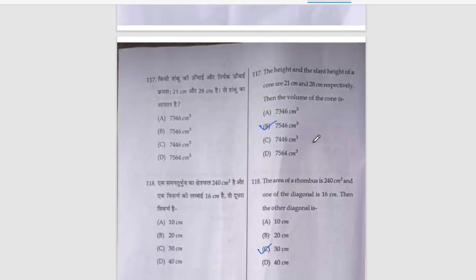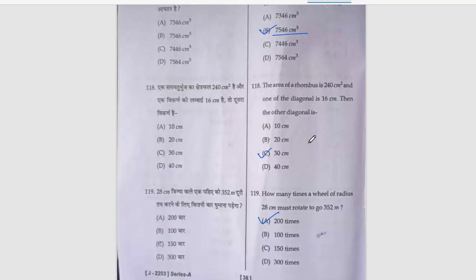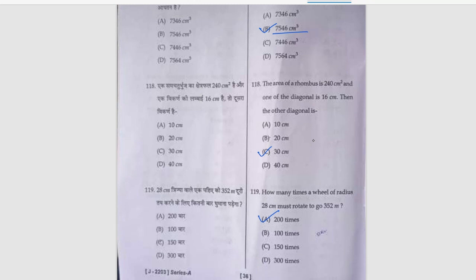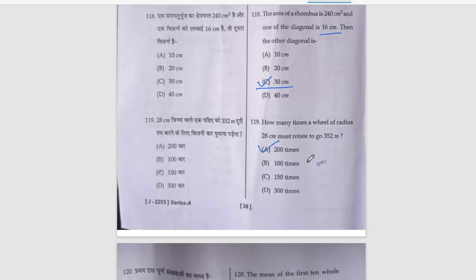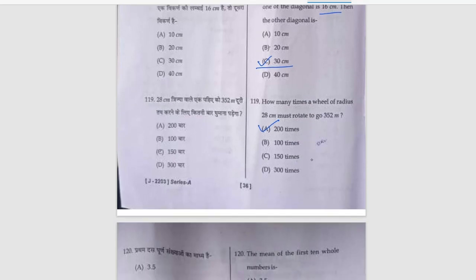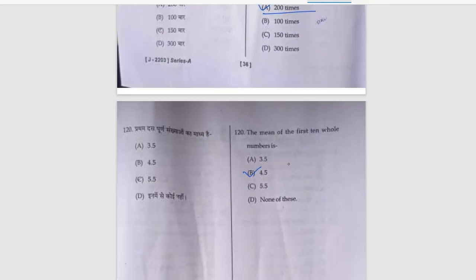Height and slant height of cone are 21 and 28 respectively, then the volume is 7546, option number B. Area of rhombus is 240 cm square and one of the diagonals is 16, that is option number C, 30 cm. The mean of first n whole numbers is 4.5, option number B.